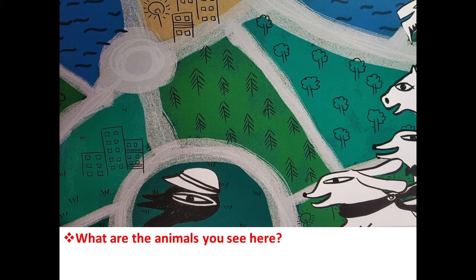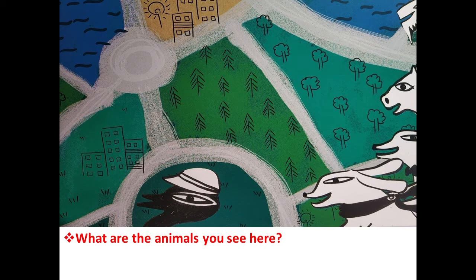Turning to the next page. This, children, is in continuation to the first page. And the question is, what are the animals you see here? It's one long page — two pages next to each other. The question remains the same: you have to name the animals that you can see on this page.